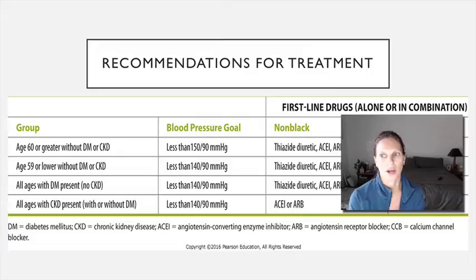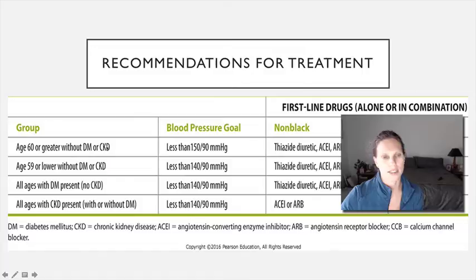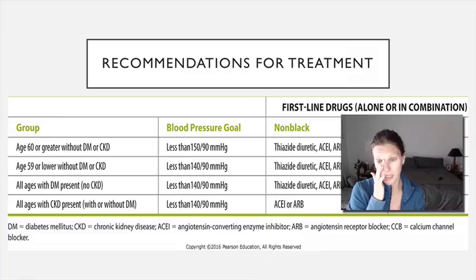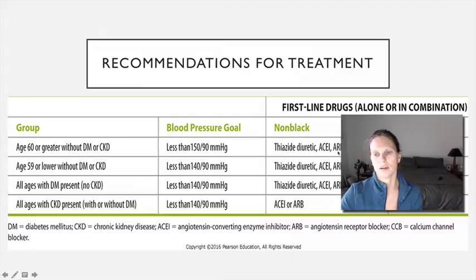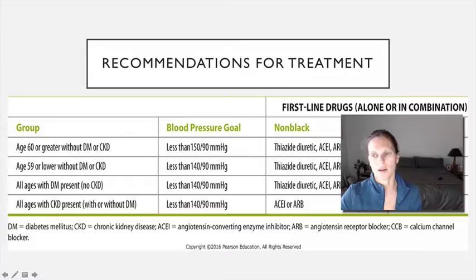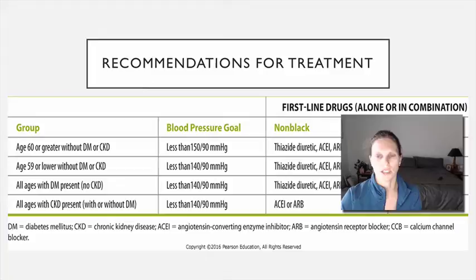Different ages and different factors determine whether or how we should intervene. For age 60 or greater without diabetes or chronic kidney disease, the blood pressure goal is less than 150 over 90. In non-African-Americans, first-line treatment might include a diuretic, an ACE inhibitor, an angiotensin receptor blocker, or a calcium channel blocker. African-Americans respond better to just a diuretic or the combination of a diuretic and a calcium channel blocker.